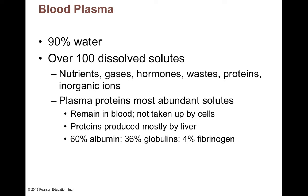For blood plasma, it's 90% water by weight. In plasma we find lots of dissolved solutes like nutrients, gases, hormones, wastes, proteins, and inorganic ions. This is what we talk about as serum. Of all the solutes in plasma, proteins are the most abundant — you find a lot of protein in blood plasma.